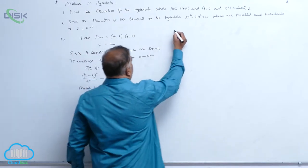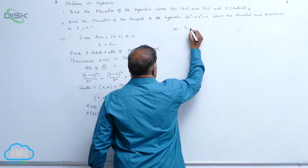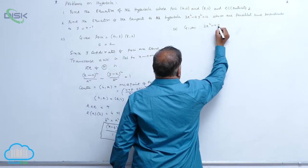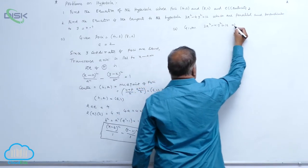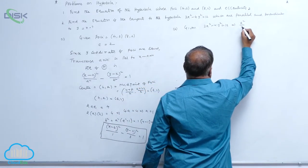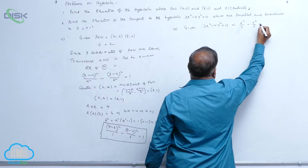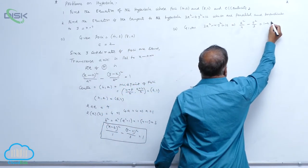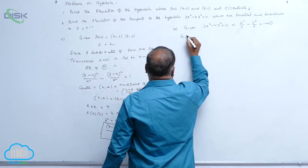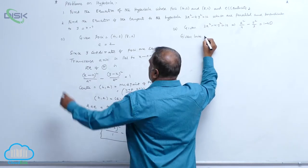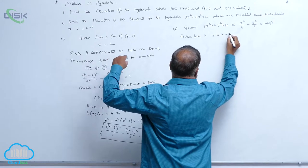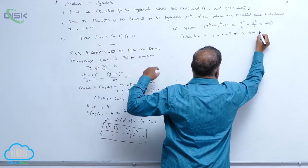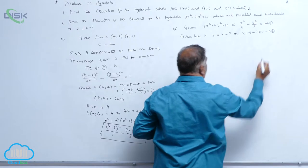Now coming to the second problem. The given hyperbola is 3x² − 4y² = 12, which reduces to standard form x² / 4 minus y² / 3 = 1 — call it equation 1. The given line is y = x − 7, or x − y − 7 = 0 — call it equation 2.